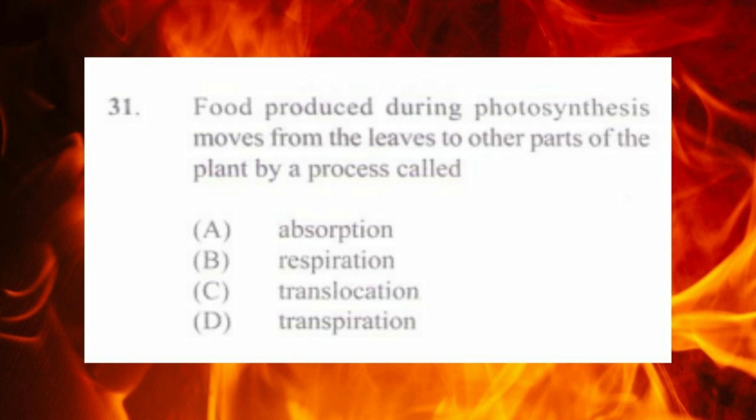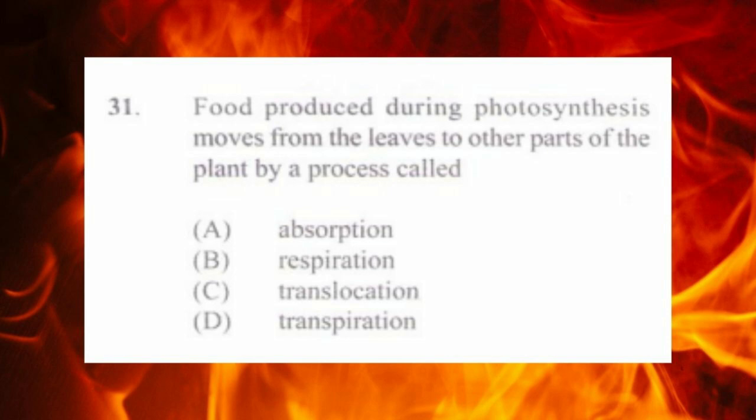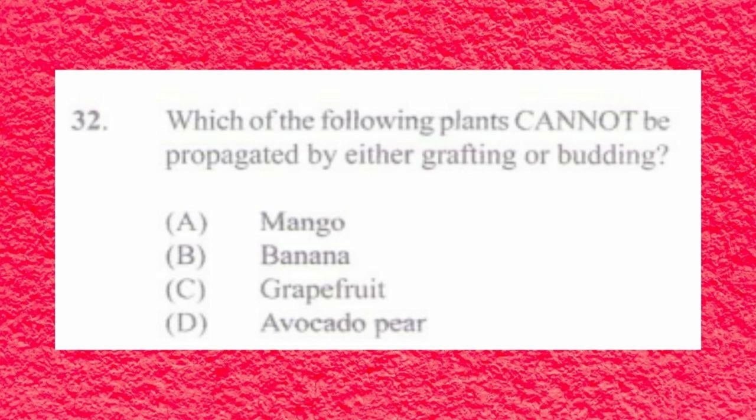Question number thirty-one: food produced during photosynthesis moves from the leaves to other parts of the plant by a process called a) absorption, b) respiration, c) translocation, d) transpiration. The answer is c) translocation.